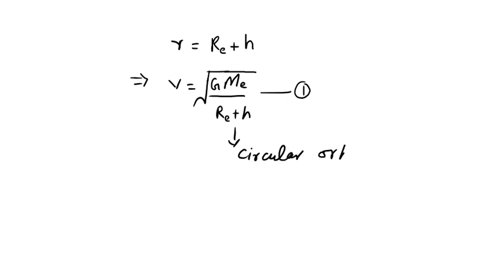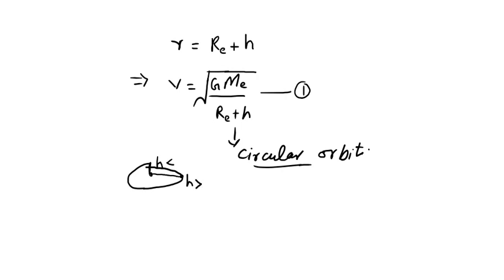If the Earth is not a perfect sphere, the orbit may not be a complete circle — it could be an elliptical path. In that situation, the height at one point may differ from the height at another. We may have a discussion on that in coming videos.